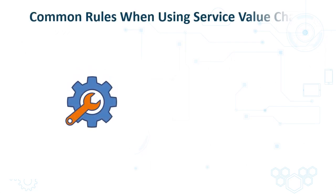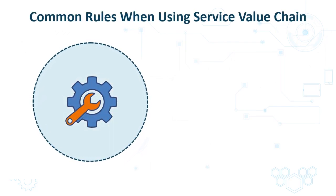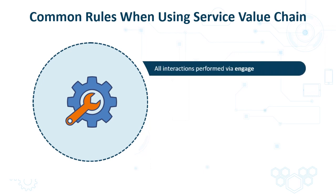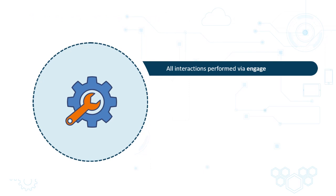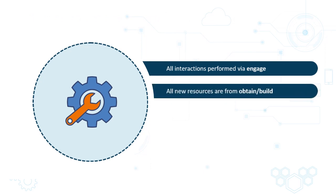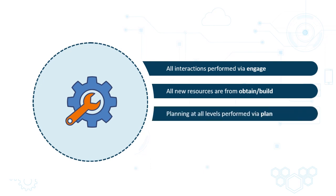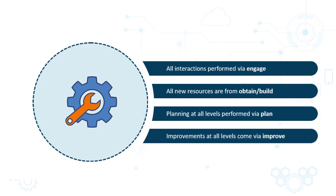Regardless of which practices are deployed, there are some common rules when using the service value chain. First, all incoming and outgoing interactions with parties external to the value chain are performed via ENGAGE. Secondly, all new resources are obtained through OBTAIN-BUILD. Thirdly, planning at all levels is performed via PLAN. And finally, improvements at all levels are initiated and managed via IMPROVE.